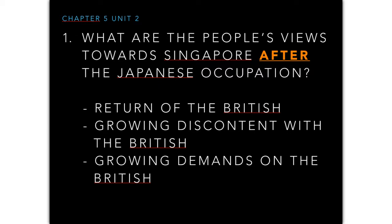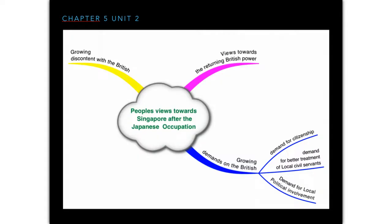There are essentially three big ideas in this unit. First, people's views changed with the return of the British. Second, there was a growing discontent with the British over matters such as housing and schools. Third, there were more and more demands on the British. The mind map shows three branches: views towards the returning British, growing discontent, and growing demands — including demands for citizenship, better treatment of local civil servants, and greater political involvement.